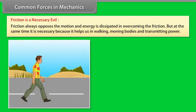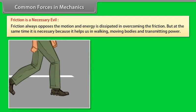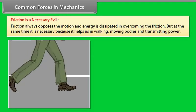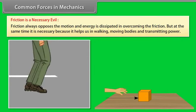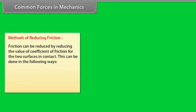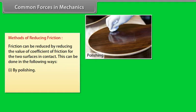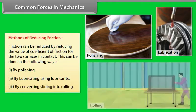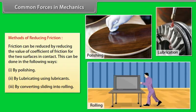Friction is a necessary evil. Friction always opposes motion and energy is dissipated in overcoming it, but it is necessary because it helps us in walking, moving bodies, and transmitting power. Methods of reducing friction include: (1) polishing, (2) lubricating using lubricants, and (3) converting sliding into rolling.